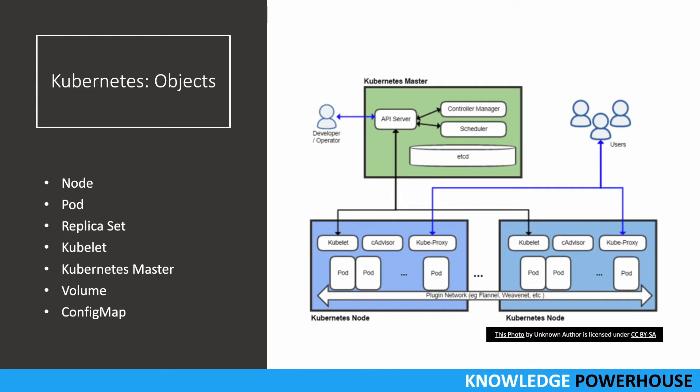Here is a high-level diagram of Kubernetes. A developer or DevOps operator interacts with the Kubernetes master. Within the master you have the API server, which provides APIs to the controller manager and scheduler, and etcd for configuration management. Downstream you have multiple nodes, and in each node you have a kubelet, a cAdvisor, a kube-proxy, and multiple pods. We'll cover seven key objects: node, pod, replica set, kubelet, Kubernetes master, volume, and config map.